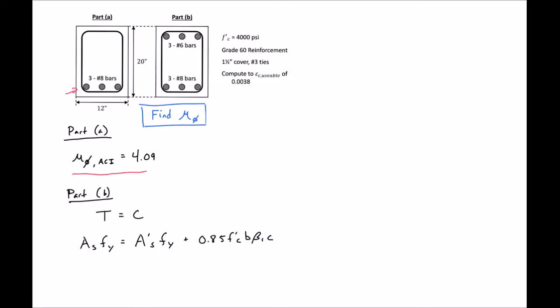Now we could go through this example assuming that our compression steel yields. I'll tell you that we're going to find that our compression steel doesn't yield. So I'm going to use F prime S in this expression.